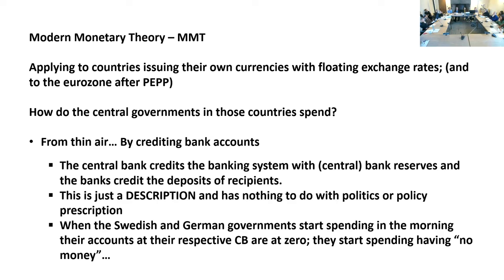Doing a little description of MMT turns all of this on its head and simply describes how governments spend — meaning governments that have their own currencies and floating exchange rates. They spend from thin air by crediting bank accounts. More precisely, they credit central banks with reserves and the deposit accounts of recipients with deposits. This is just a description. It has nothing to do with politics or policy. And that's why Dirk Enns, one of the best European MMTers, emphasizes that all of this is falsifiable — it can be tested. It's not like neoclassical assumptions. This is hardcore, falsifiable stuff.